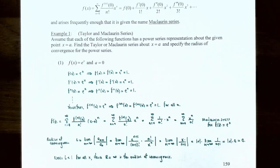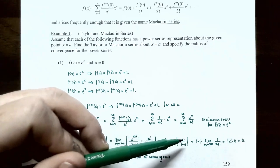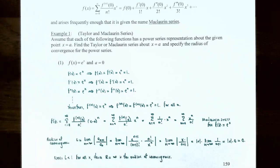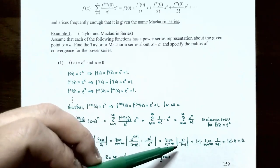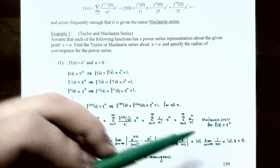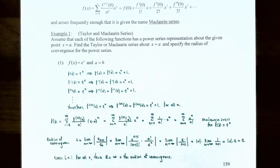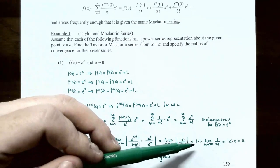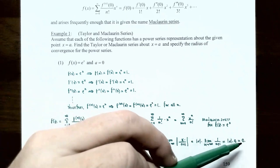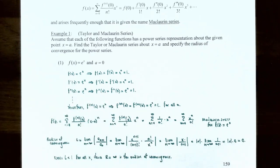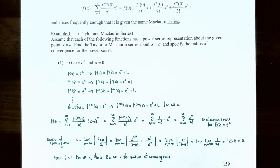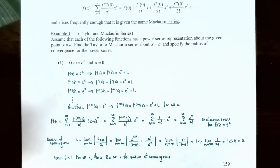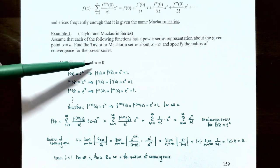Taking |x| outside the limit times the limit of 1/(n+1) as n→∞, which equals 0. So the limit is |x|·0 = 0. Since the limit is 0, which is less than 1 for all values of x, the radius of convergence is infinity. This power series representation for e^x converges for all values of x.